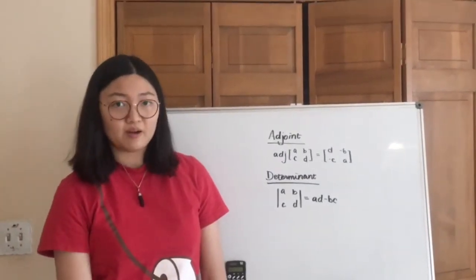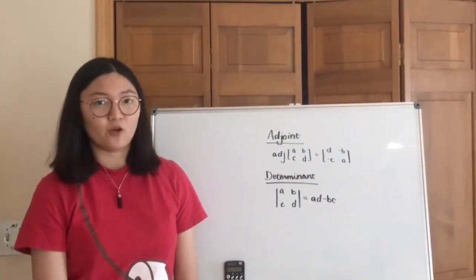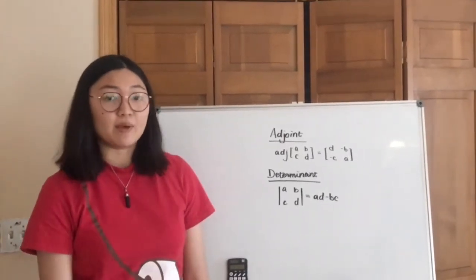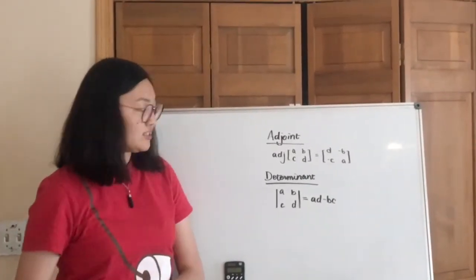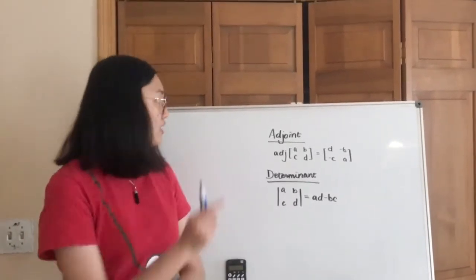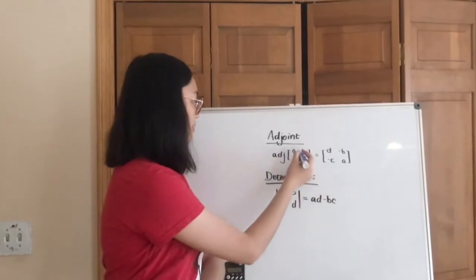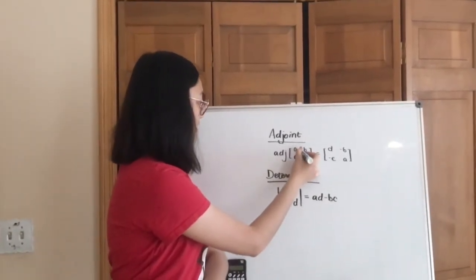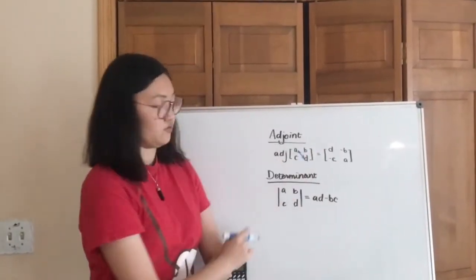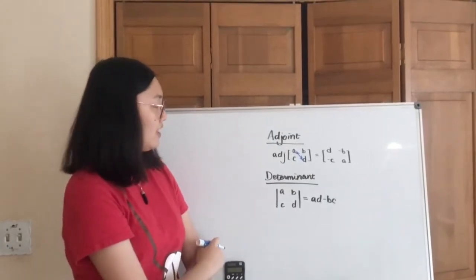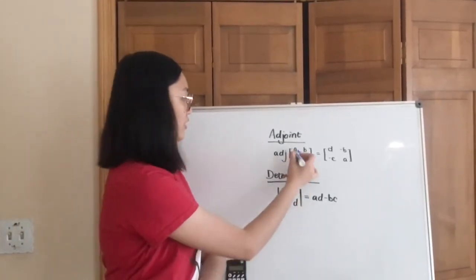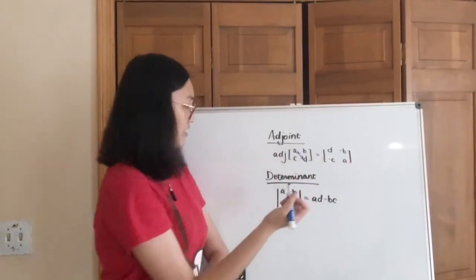In order to talk about the inverse of a key, we have to note two very important topics in matrix math. One is called the adjoint and the other is called the determinant. So the adjoint is a matrix that you can get by flipping the position of a and d, here shown in a 2x2 matrix, and then putting negative signs in front of b and c.